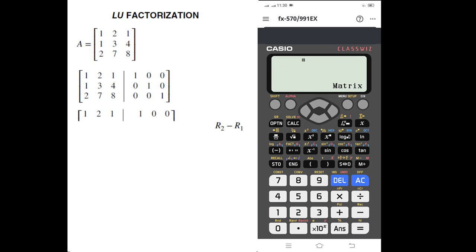The first operation is R2 minus R1. So we will apply mat B minus mat A. This is our result: 0, 1, 3, -1, 1, and 0. We will update this matrix in matrix B by applying store and the B button. We can see in the upper portion it is now matrix B.